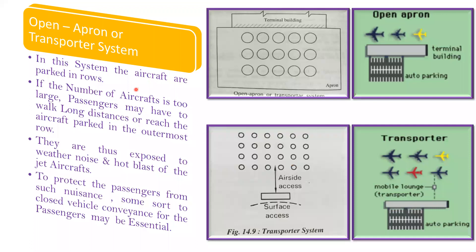The next is the open apron or transporter system. Here you have a terminal building and an open apron, with aircraft parked in rows. If the number of aircraft is too large, passengers may have to walk long distances to reach aircraft parked in the outermost rows. They are exposed to weather, noise, and hot blast of jet aircraft. To protect passengers from such nuisance, some sort of closed vehicle conveyance may be essential. This is called the open apron or transporter system.